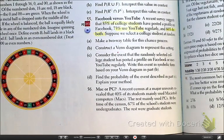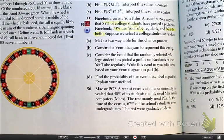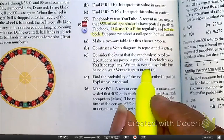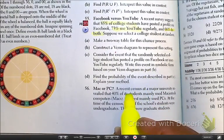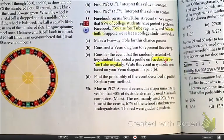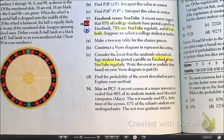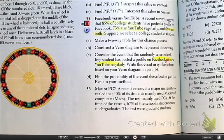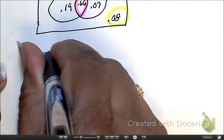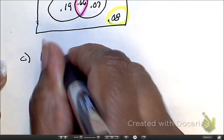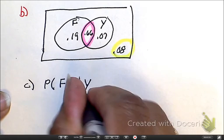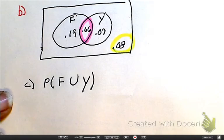Now let's wrap this problem up. We've got a little time. Consider the event that the probability selected college student has posted a profile on Facebook or on YouTube regularly. The key phrase right here is or. They're asking us for the event in symbols. So for part C, this is the probability of Facebook or, because remember that's the union symbol, YouTube. Okay, that's it. That's all they want.